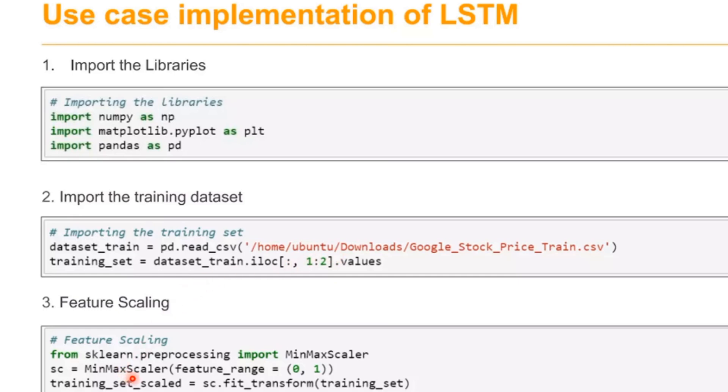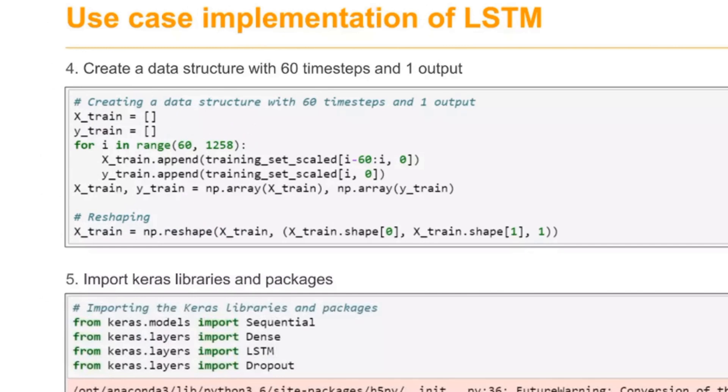Then scale the features of that input data within a particular range. After feature scaling, create a data structure with 60 time steps and 1 output. After that, reshape that value.